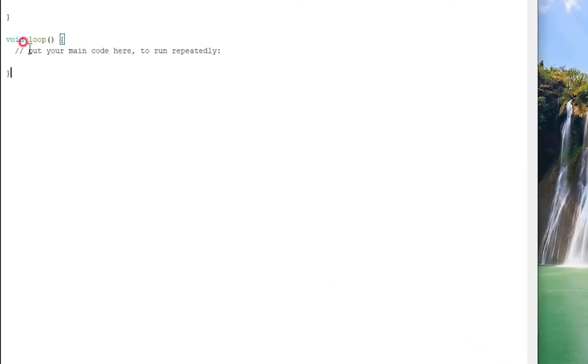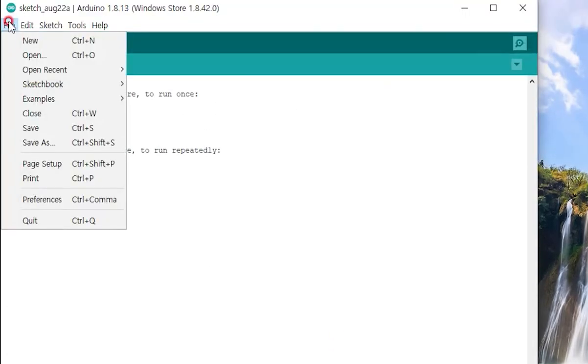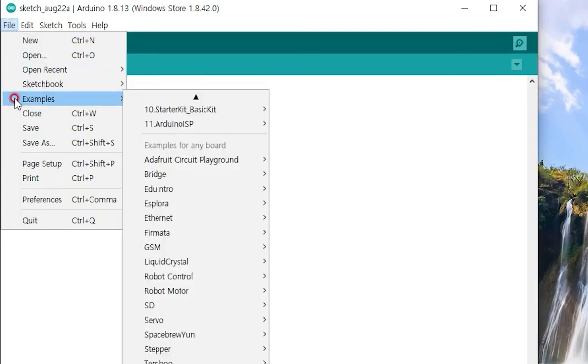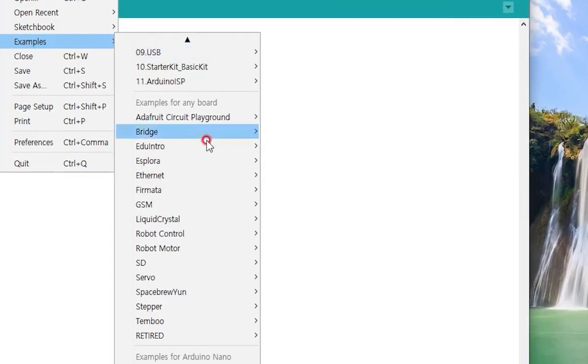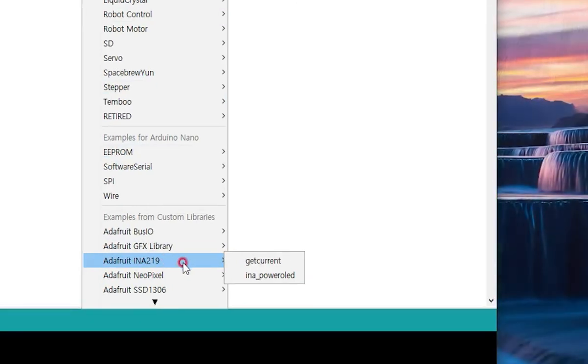After that, you can open an example file under File, Examples, Adafruit INA 219, get current.